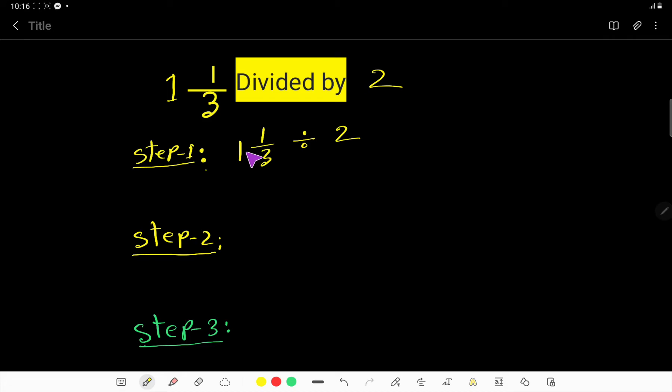This is a mixed fraction because it has a whole number part and fractional part. We will change this mixed fraction to improper fraction. To do so, we have to multiply the whole number by the denominator.